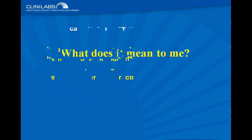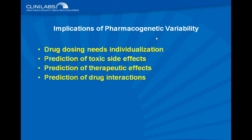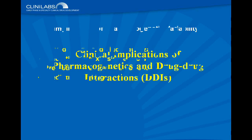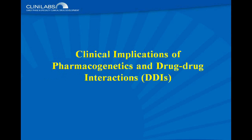What does this mean to me? The implication of pharmacogenetic variability is that drug dosing needs individualization. The new warfarin product label includes specific dosing recommendations based on CYP2C9 and VKORC1 genotypes. The old approach of one dose for every human being in the world is not accurate in many instances. Pharmacogenetics can also help predict toxic side effects, therapeutic effects, and drug interactions.